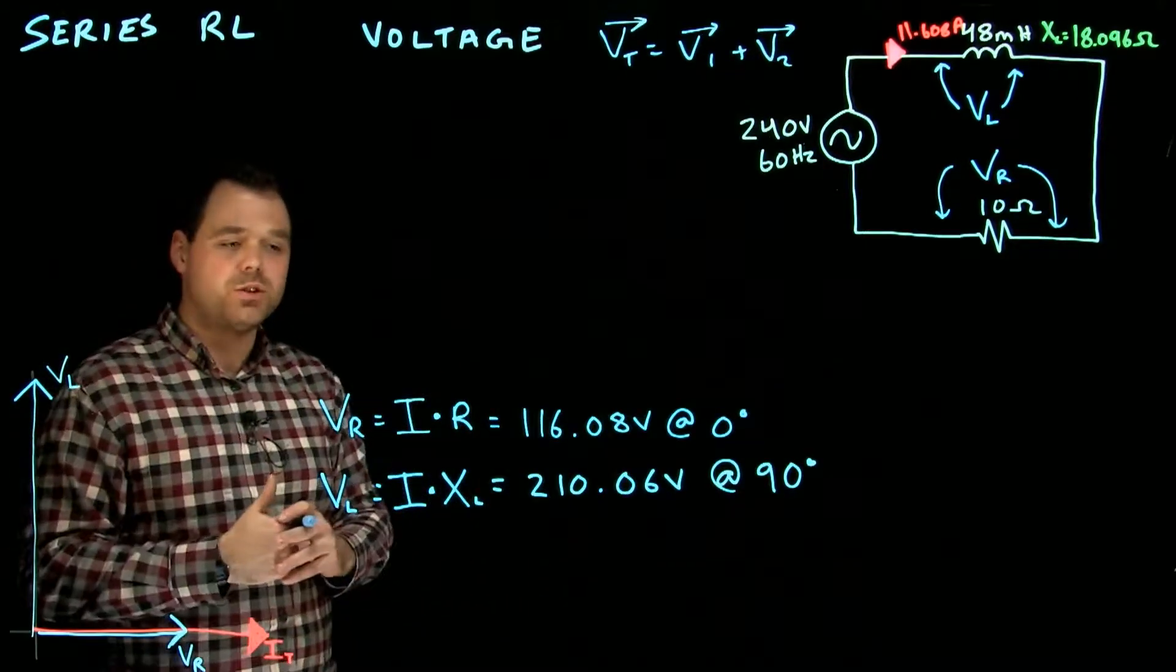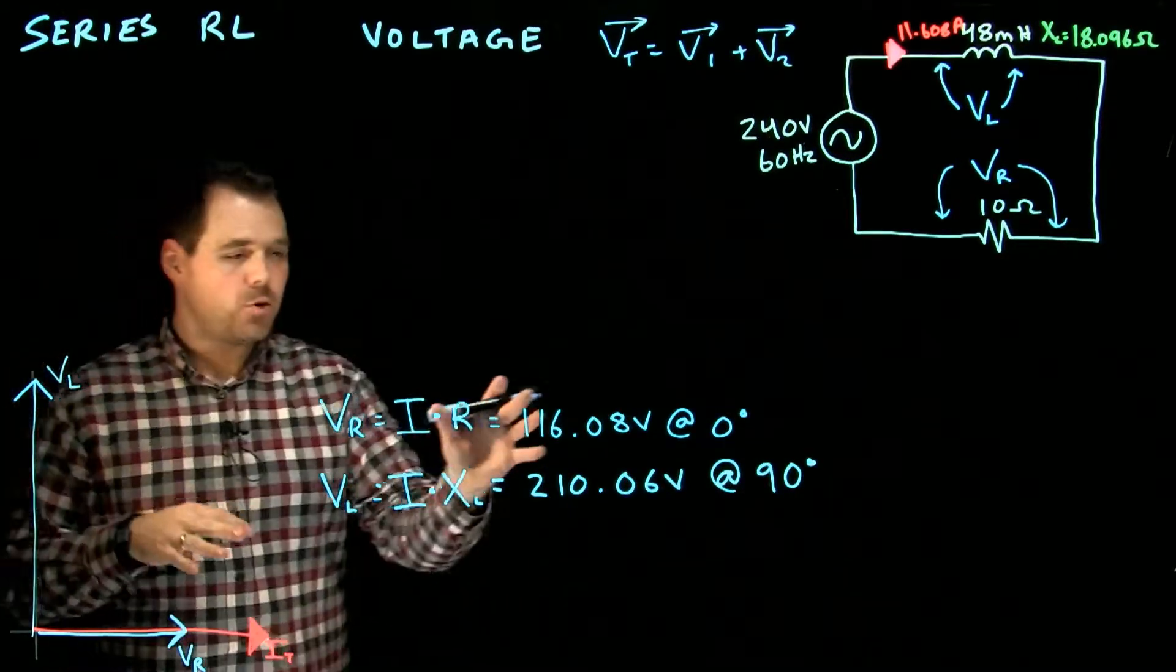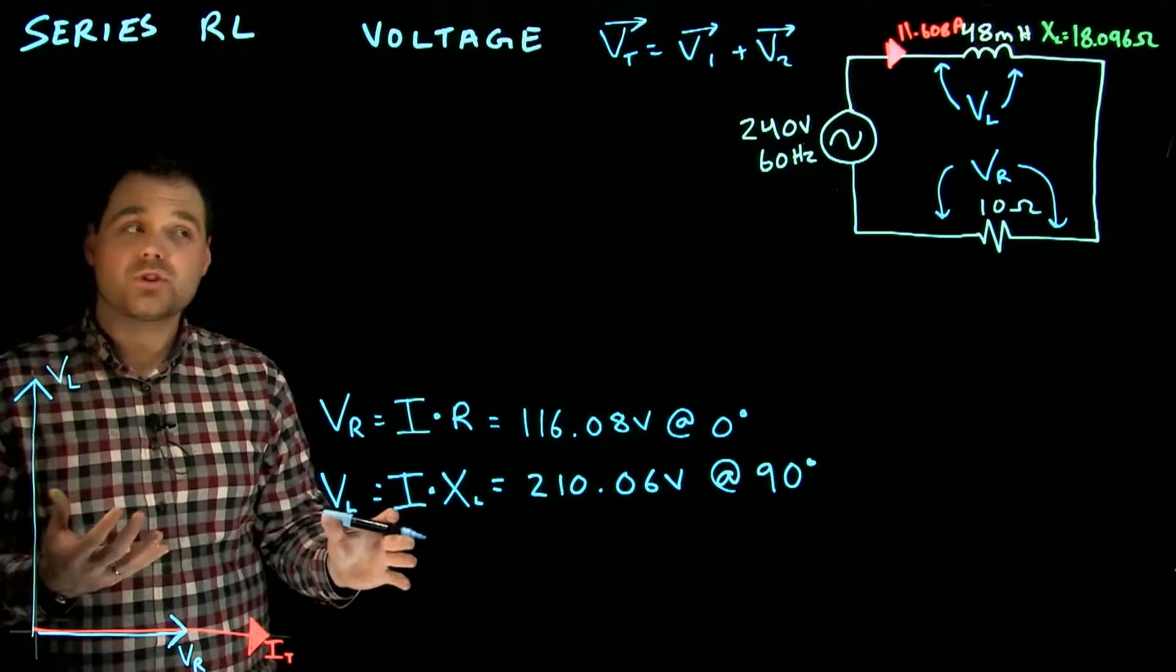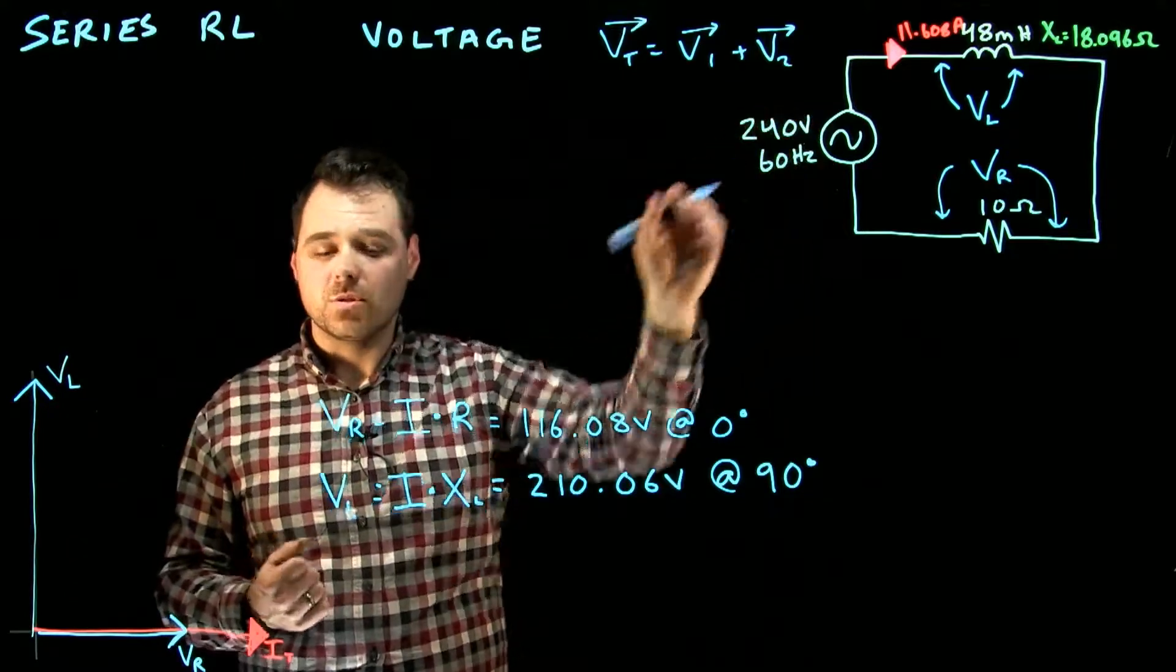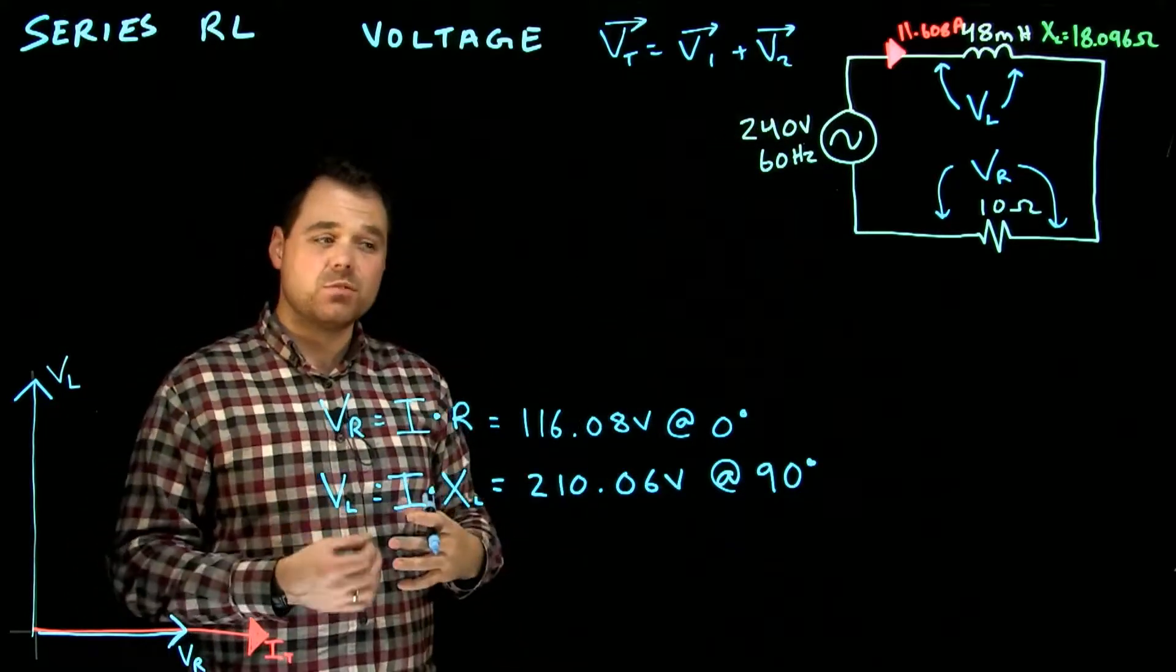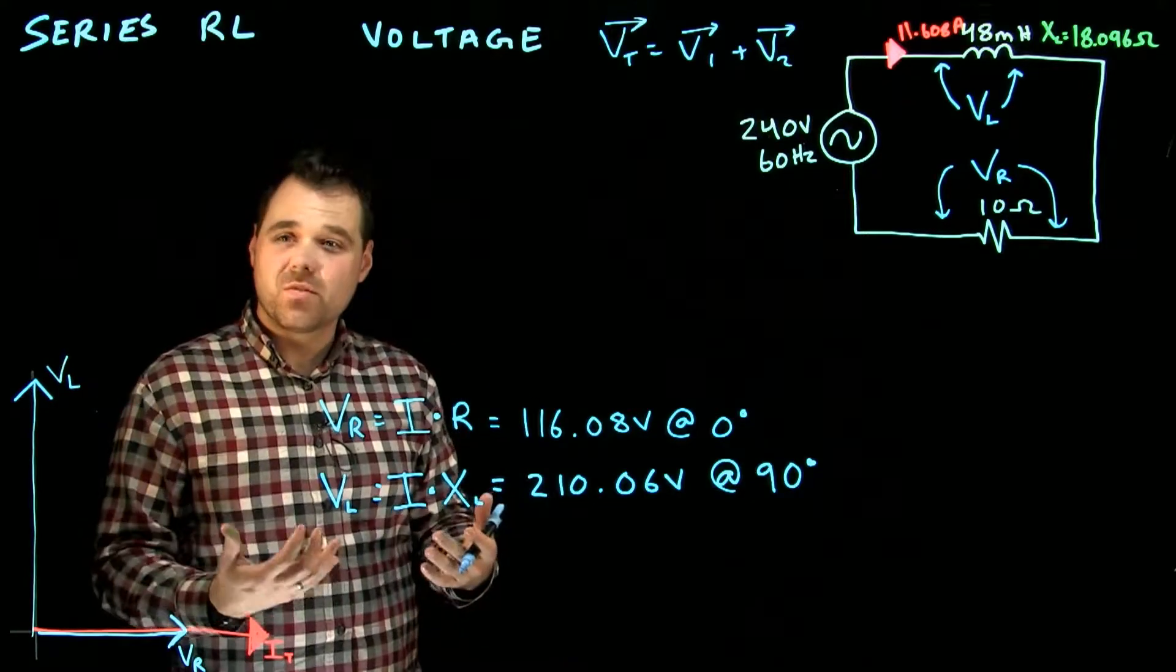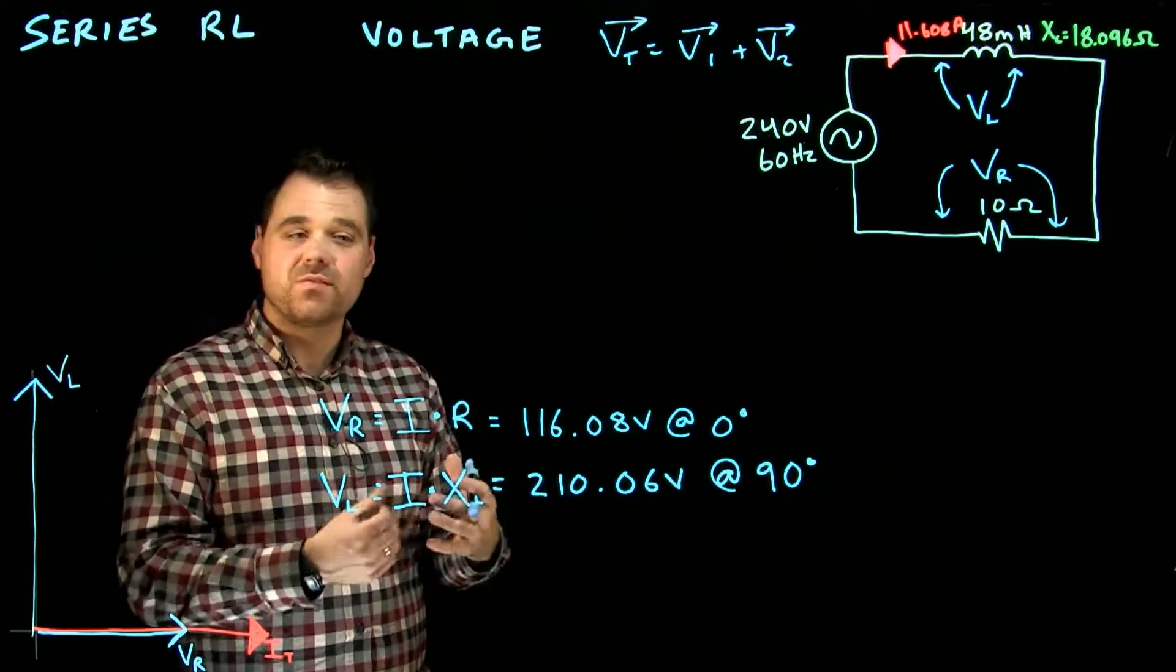So now we've got these two voltages, right? If we were to just take 116 plus 210, we would expect those to add up to source voltage, but as they are right now, they don't equal source voltage. So what we actually have to do is we have to add these vectorally. We're going to add the horizontals and we're going to add the verticals, and we're going to find the resultant phasor of the two.